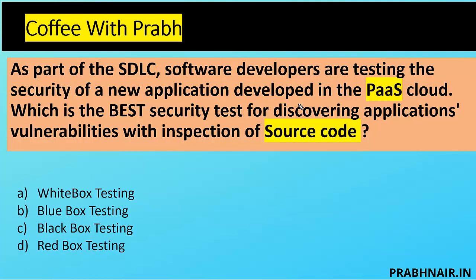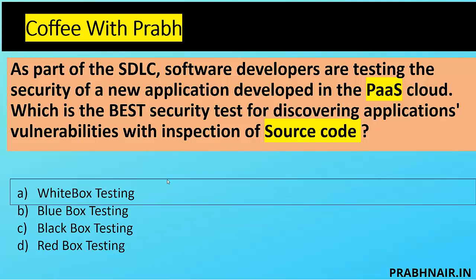Next coffee short: as part of SDLC, software developers are testing the security of a new application developed in a PaaS cloud. Which is the best security test for discovering application vulnerabilities with inspection of the source code? White box means we have access to the source code. There is nothing called red box or blue box — we have red teaming and blue teaming. In black box we don't have access to the source code. Since the question says 'inspection of source code,' the answer is A — white box with a SAST approach.